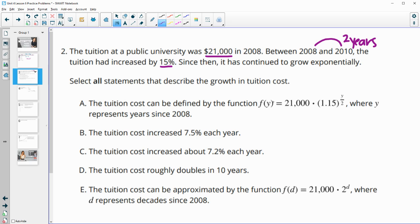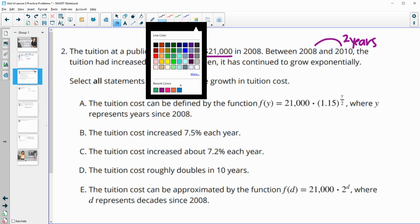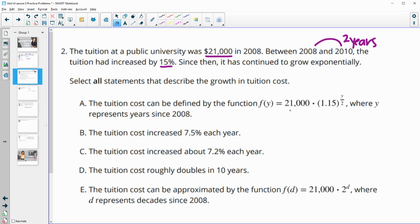So the tuition cost can be defined by a function of 21,000 times 1.15 to the year divided by two, where it represents the year since 2008. So this one will be good because we have the initial amount. We've got the growth factor since it's growing 15%. That means the growth factor is really 115%, which is 1.15. And then they account for the fact that this was in two years in the exponent.